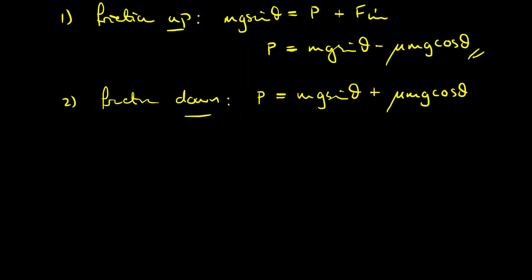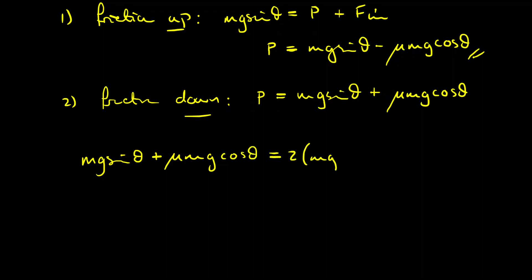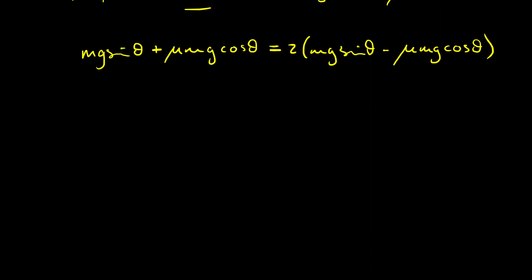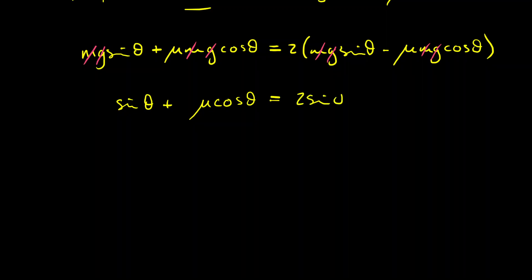The question tells us the upper value of P equals twice the lower value. So we write: mg sin θ + μ mg cos θ = 2(mg sin θ − μ mg cos θ). We can cancel off m and g throughout, leaving: sin θ + μ cos θ = 2 sin θ − 2μ cos θ.